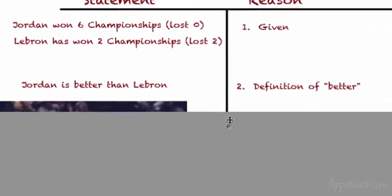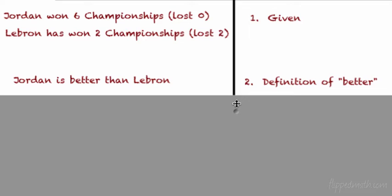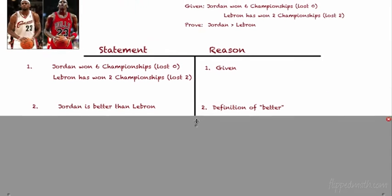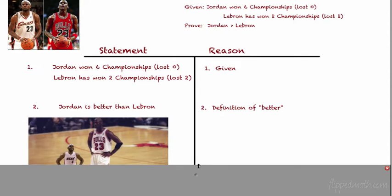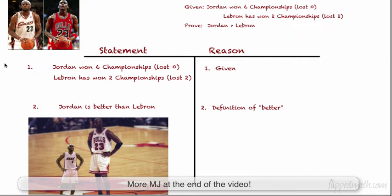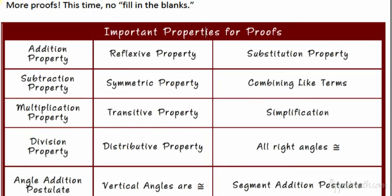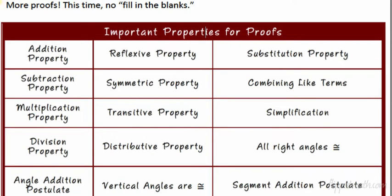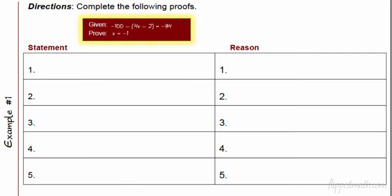Next statement: Jordan is better than LeBron. And that's the definition of better — winning championships means you're better, not losing them. We have all these properties for proofs; you have to put them all in your brain. I'm not going to give them to you — they're going to be on the test. You have to know them. We're going to do three proofs today, and when we're done with our three proofs, then you have a bunch of practice.